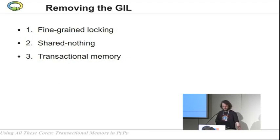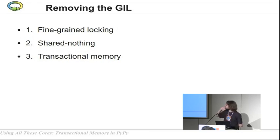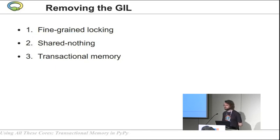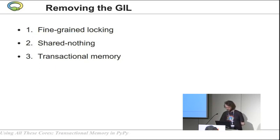So how do we remove the GIL? There are three approaches. The first is called fine-grained locking. The second is shared nothing. And the third, which I'm going to present, is transactional memory.